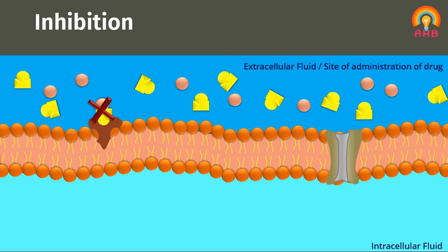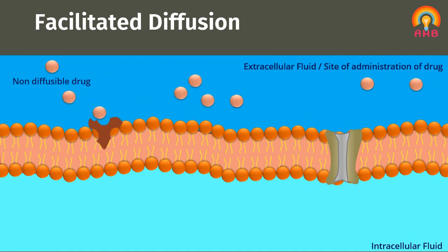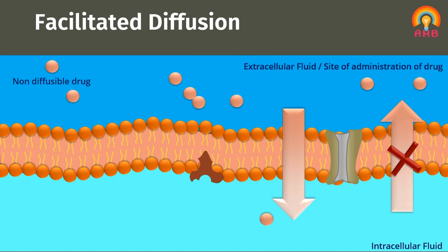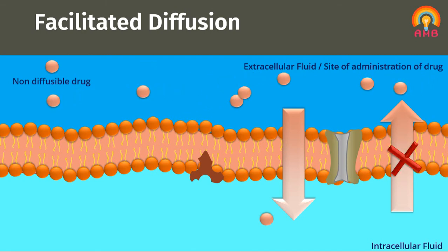Now we are discussing subtypes of carrier-mediated transport. First, we will discuss facilitated diffusion. Facilitated diffusion is similar to passive diffusion, but the only difference is that this diffusion is facilitated by carrier molecules. Thus, this process can transport even non-diffusible substances. Flow of drug takes place from higher concentration to lower concentration only. This process takes place more rapidly than simple diffusion as a carrier molecule is involved. Since flow takes place from higher to lower concentration, it does not need energy.